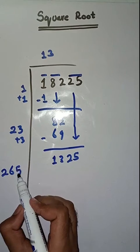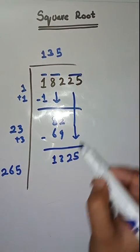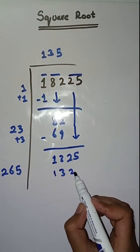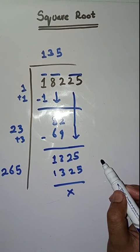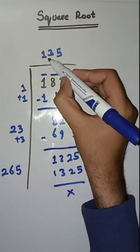Now we will take a number 5. 265 times 5 is 1325. So this is completely solved. So square root of 18225 is 135.